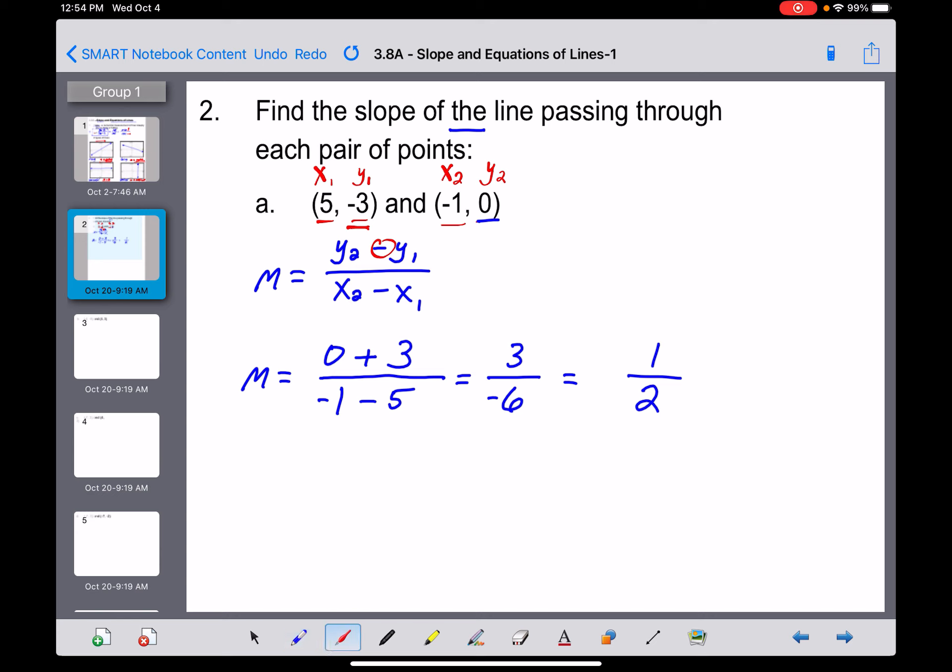Then down in the denominator, x sub 2, which is -1, minus x sub 1, which is 5. I think we can do this without a calculator. 0 plus 3 is going to get us a 3 on top, and -1 minus 5 is -6. Now, one thing you're always going to have to do with your slope answer is put it in simplest form. So I'm hoping everybody can see this here, that 3 over 6, we can divide out a 3, and we're going to end up with 1 over 2. What I do want to point out is the fact that this slope that we had right here has a negative in the denominator. So that means that my answer is going to be negative as well. It is perfectly fine if you want to leave that negative in the denominator. It's also okay and more common to move that negative up into the numerator.